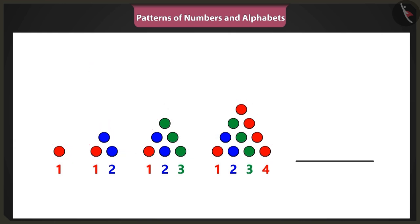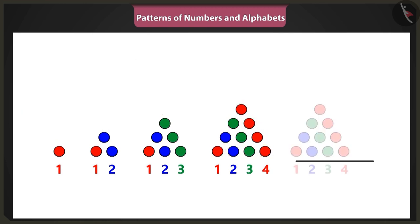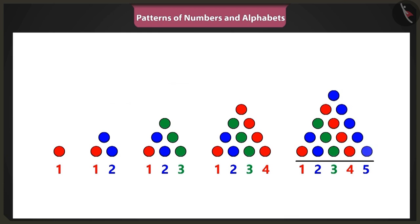And yes, in this pattern, the blue dots are behind the red dots and then you have the green dots and they are repeated in specific order. Therefore, at this fifth position, after four, we will write five and we will place five blue dots after four red dots in such a manner that they make a triangle.